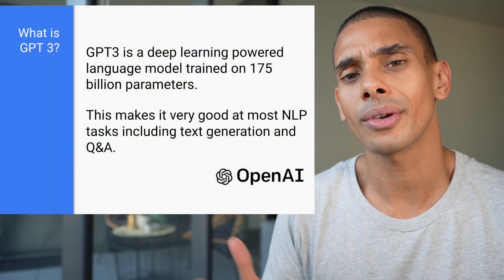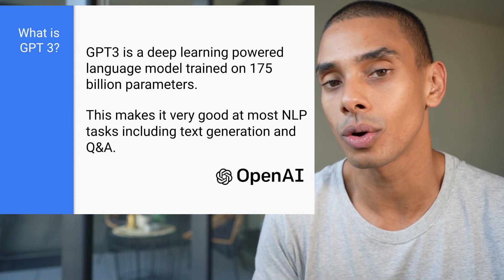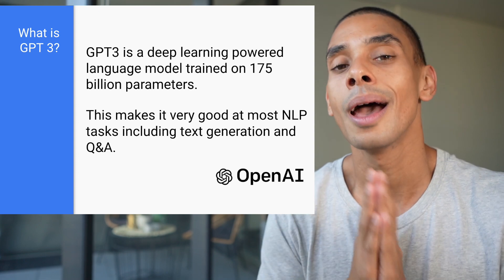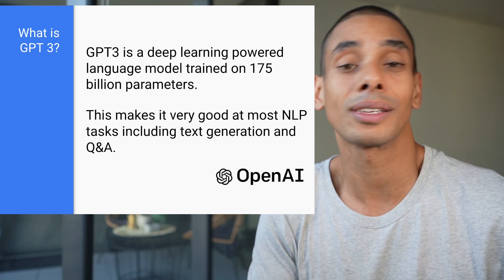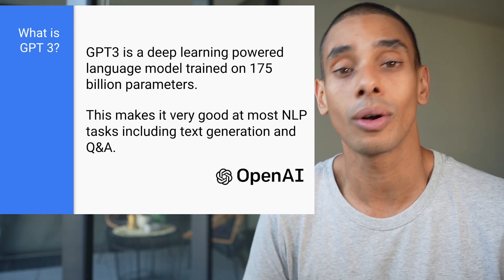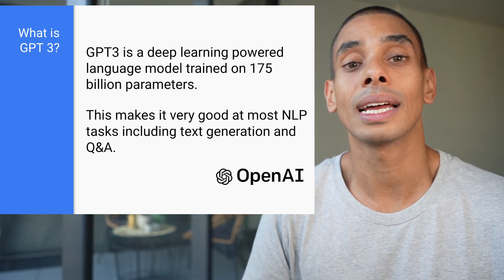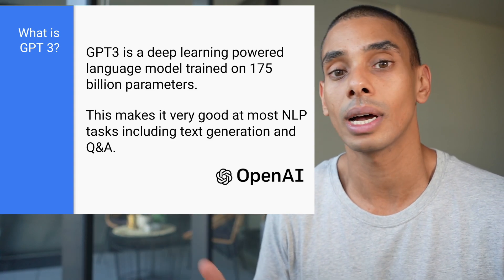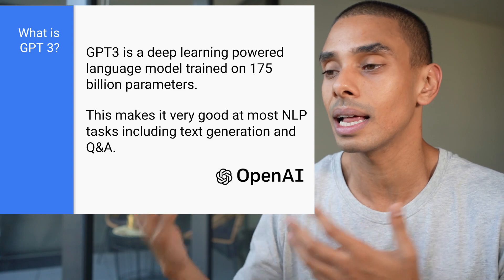Let's take a deeper look at what we'll be going through. GPT-3 is a deep learning powered language model trained on 175 billion parameters by OpenAI. This means it would take a huge amount of time to train something as sophisticated as this on a consumer GPU. The amazing thing about this model is that it's really flexible and performs really well on a range of natural language tasks like text generation, Q&A, sentiment, and classification.